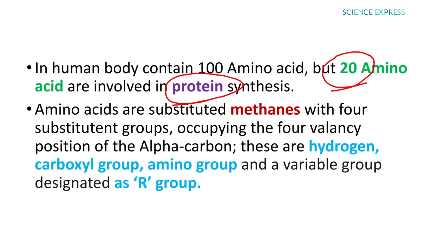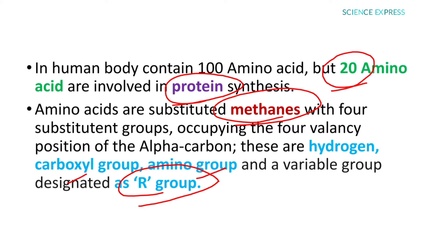Amino acids are substituted methane groups, with four substituent groups occupying the four valency positions of the alpha carbon. These are: hydrogen, carboxyl group, amino group, and a variable group designated as the R group. So an amino acid is a methane derivative, where the four valencies of the carbon are replaced by hydrogen, carboxyl group, amino group, and R group.